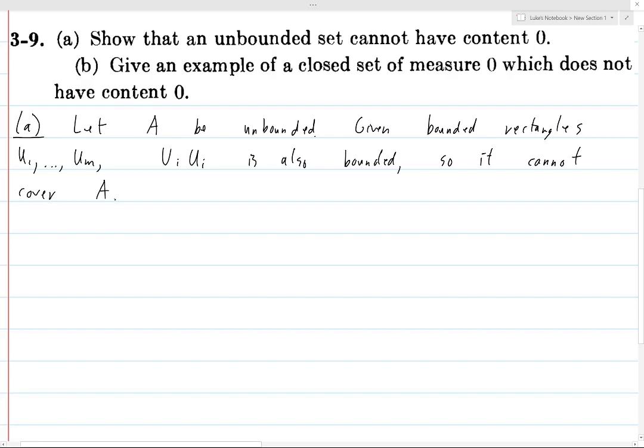So it cannot cover A because A is unbounded. So given any bounded set, there are elements of A which lie outside of that bounded set. Not only can you not find a finite cover of volume less than epsilon which covers A, you can't find a finite cover at all. So A cannot have content zero because you can't even cover it by finitely many rectangles.